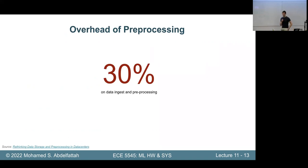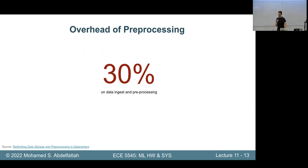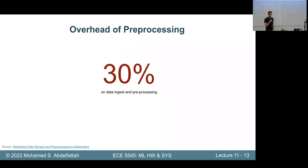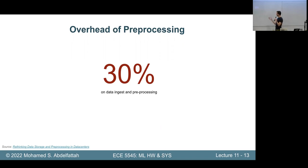If you want one takeaway number for pre- and post-processing overhead, it's roughly 30%, based on a few papers. One paper in the further reading measures overheads including database access and says it's never below 30%. So our Amdahl's Law example is quite realistic — if you speed up the DNN 10x, you still only get about a 2.2x improvement in your overall system.